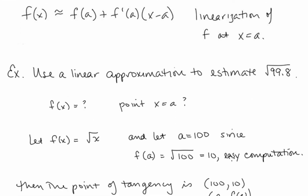Let's use a linear approximation to estimate the square root of 99.8. We need to identify f of x and the point of tangency x equals a. The simplest choice is f of x equals the square root of x. We need a convenient point of tangency near 99.8 — 100 works well since the square root of 100 equals 10. So let's make a equal to 100. Our point a, f of a is 100 comma 10, and the slope is f prime of 100.